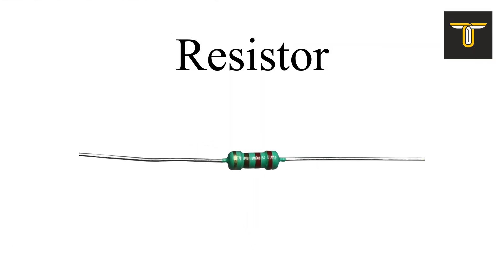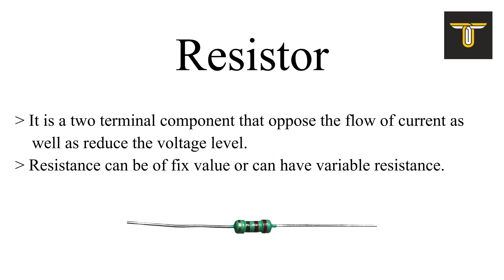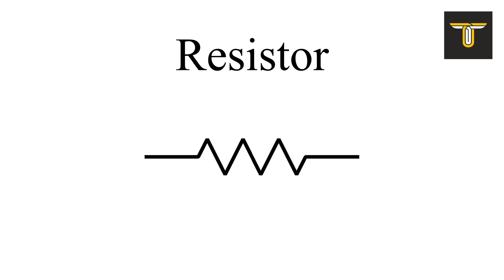First and the most important component of any electronic circuit is a resistor. It's a two-terminal component that opposes the flow of current as well as reduces the voltage level. A resistor can be of fixed value or can have variable resistance. Generally, it looks like this, but it is available in different packages. The symbol of fixed value resistance is this.